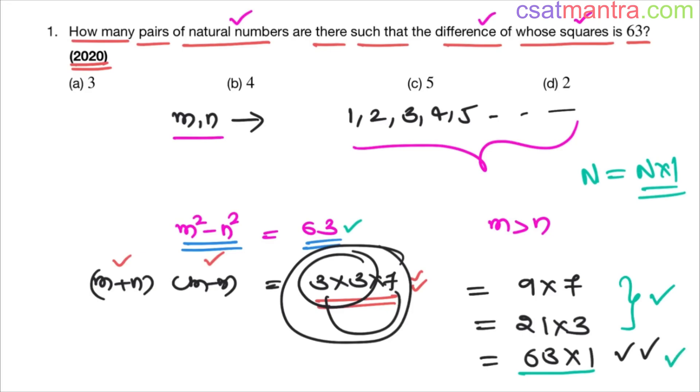Now see, there is a reason I have written bigger number first and then smaller number second, because m plus n is greater than m minus n. Sum is greater than their difference, right?